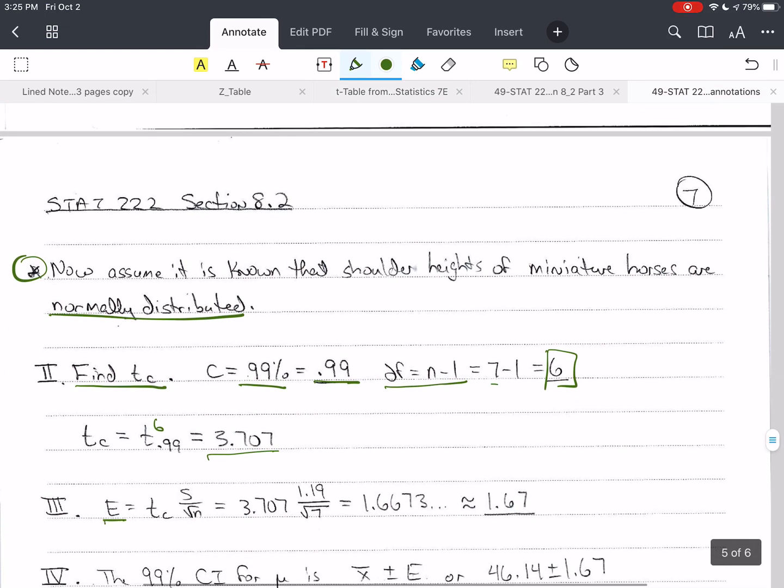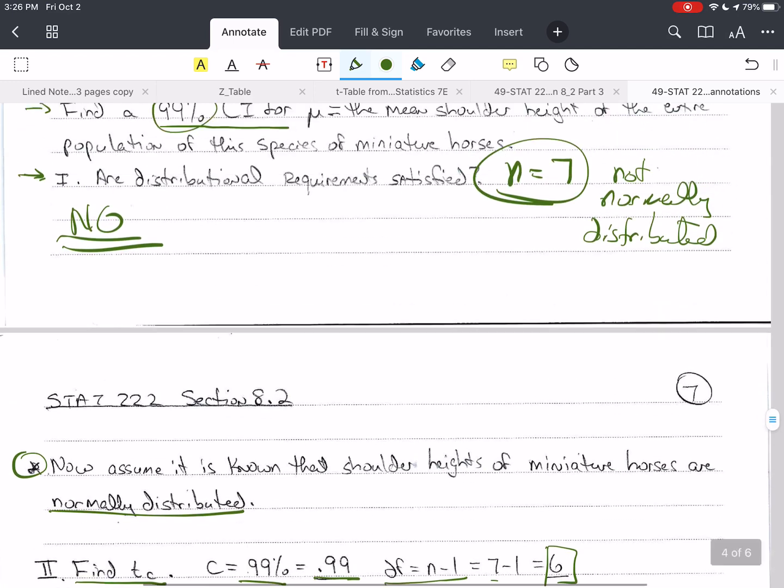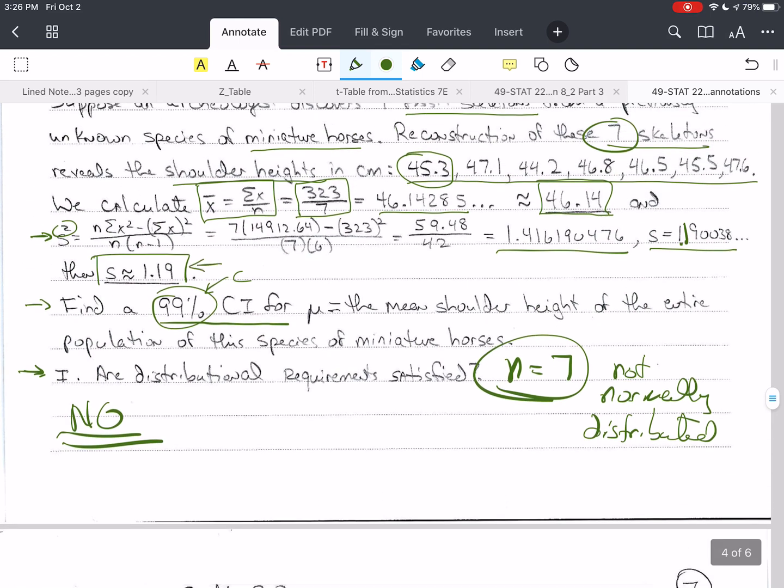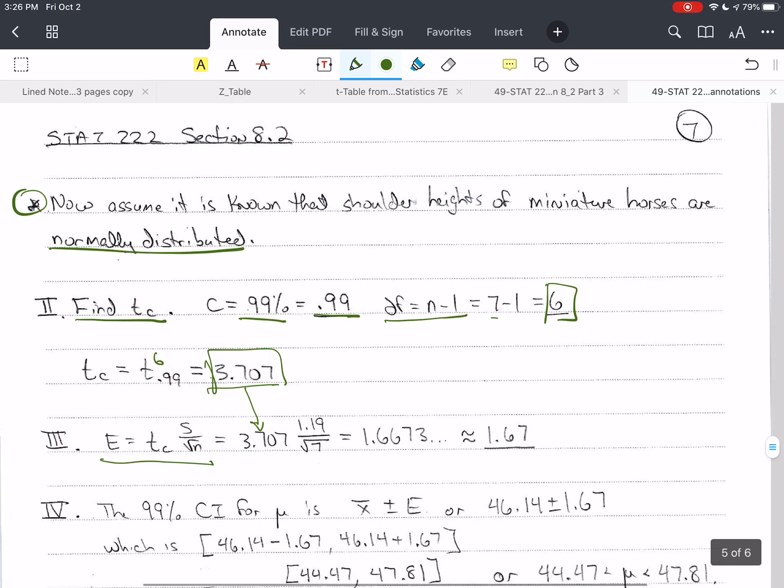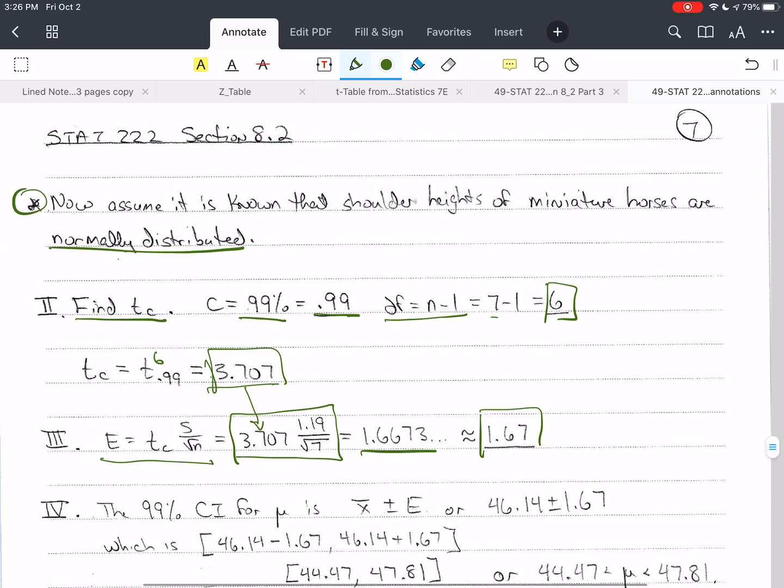Now I need to find e, the margin of error. That is t sub c times s over the square root of n. When you're doing problems on the test, you have to find out whether you have s or not. If you have s, you're going to use this formula that has t in it. I always tell students s and t go together in the alphabet and they also go together in the formula for the margin of error. Now I just plug in for those values. T sub c is 3.707, the standard deviation was 1.19, and n is 7. I multiply and divide here as needed. I get 1.6673, which is approximately 1.67 to two decimal places.